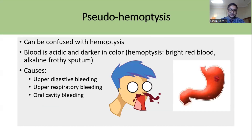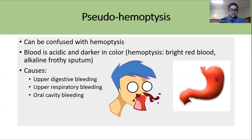When discussing Massive Hemoptysis, it is always important to differentiate it from Pseudo-Hemoptysis, which usually occurs because of bleeding from the digestive tract or from the upper airways or oral cavity. We need to carefully differentiate Pseudo-Hemoptysis from true Hemoptysis.